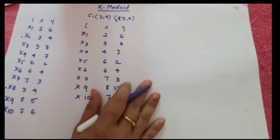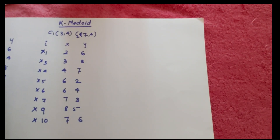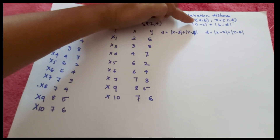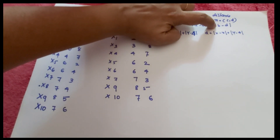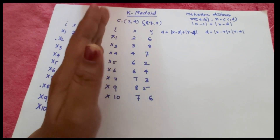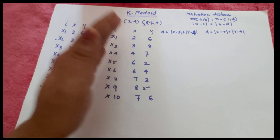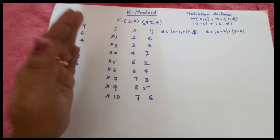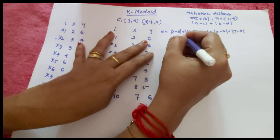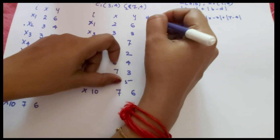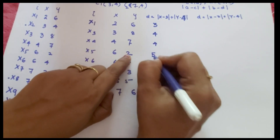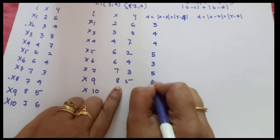We calculate distances using Manhattan distance. For points M=(A,B) and N=(C,D), Manhattan distance = |A−C| + |B−D|. We calculate the distance of each data point to medoid (3,4) and to medoid (7,4). For medoid (3,4) we get distances: 3, 4, 4, 5, 3, 5, 6, 6. For medoid (7,4) we get distances: 7, 8, 6, 3, 1, 1, 2, 2.